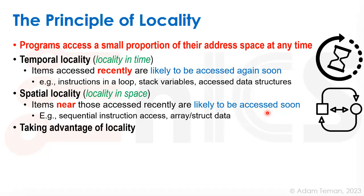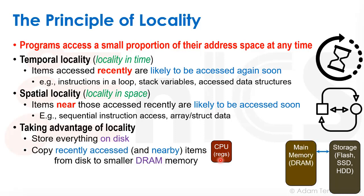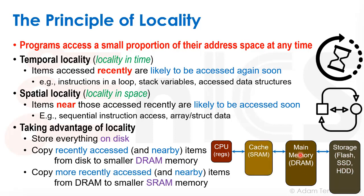How do we take advantage of this locality? We can store everything on secondary storage — disk — which has essentially unlimited space. But that's really far from our CPU and registers, which are accessed within a single cycle. So what we do is copy recently accessed and nearby items — exploiting temporal and spatial locality — first into main memory (DRAM), which is much faster than secondary storage, and then from DRAM into our limited on-chip SRAM cache. This way we keep the things we're likely to use again in fast on-chip memory that we can access very frequently.